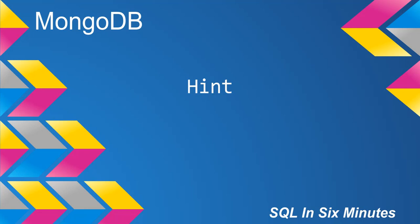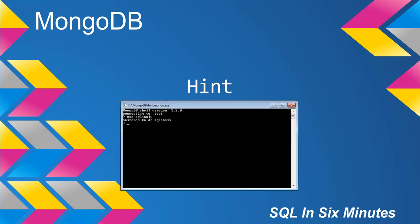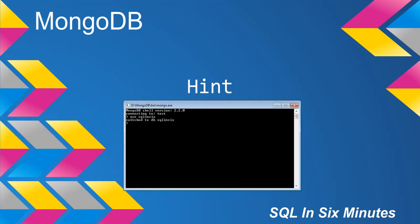This morning we're going to cover the hint operator in MongoDB. Let's suppose that we have a collection. In our collection we have two fields or keys, and we want to specify which of those fields or keys we want to use for our query.